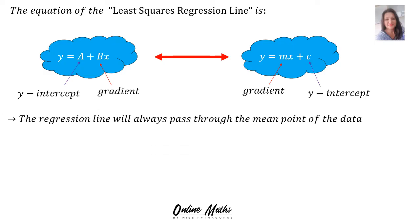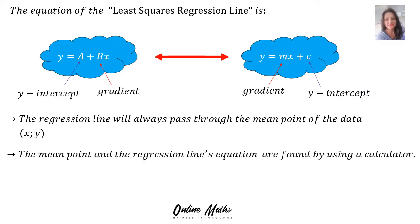The regression line will always pass through the mean point of the data, x bar y bar. The mean point and the regression line's equation are found by using a calculator. The calculator steps will follow on the next slide using an example.